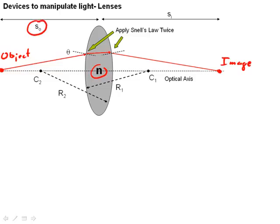The distance from the lens to the object is termed SO. The distance from the lens to the image is termed SI.